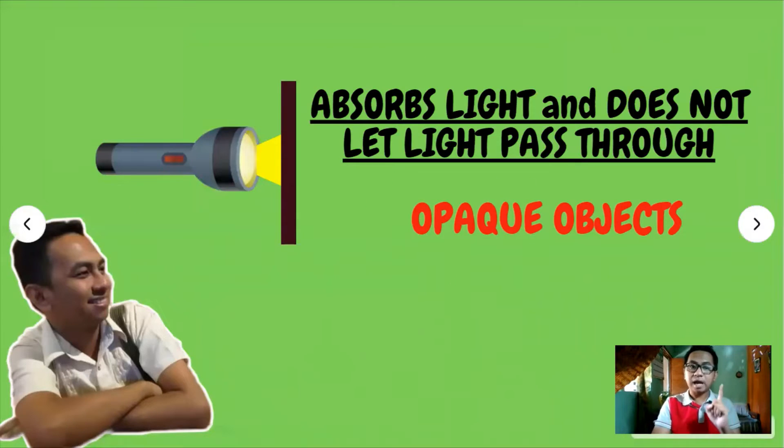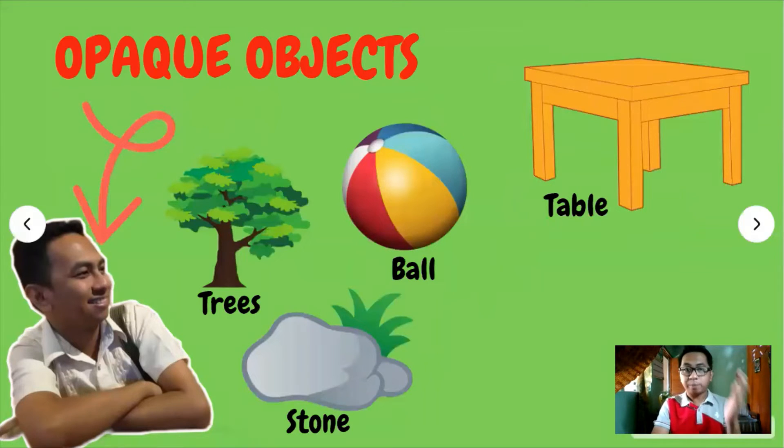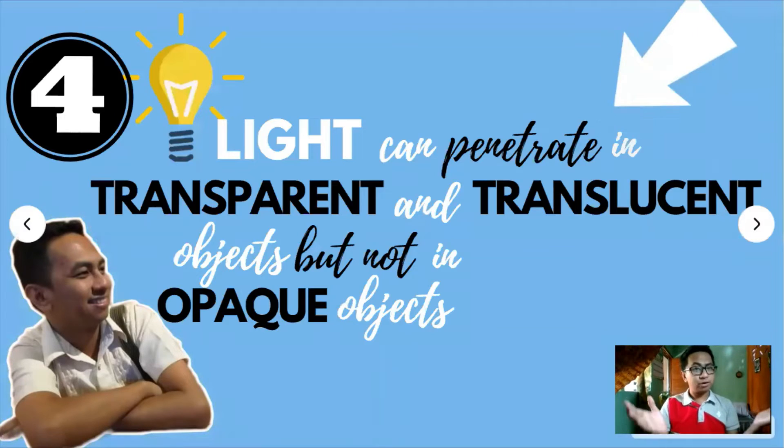But when an object absorbs the light and it does not let it pass through, this object is called opaque. Examples of opaque objects are gold, trees, stones, table, and even us humans - we are also opaque objects or opaque humans rather. For our fourth characteristic of light, light can penetrate through transparent and translucent materials but cannot pass through opaque objects.